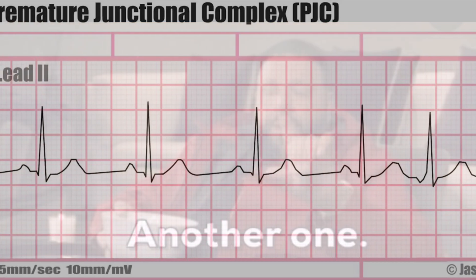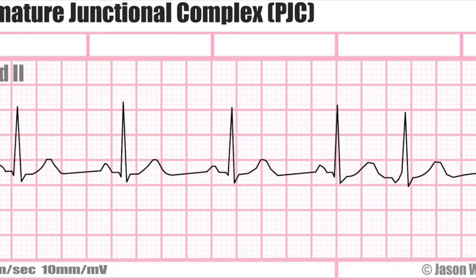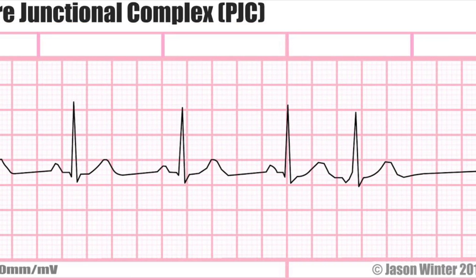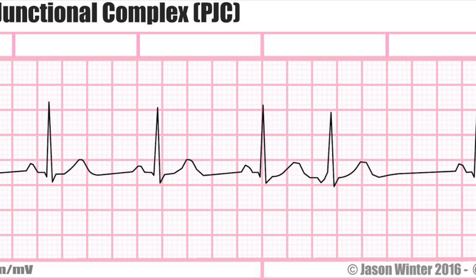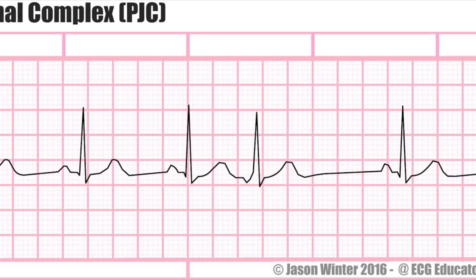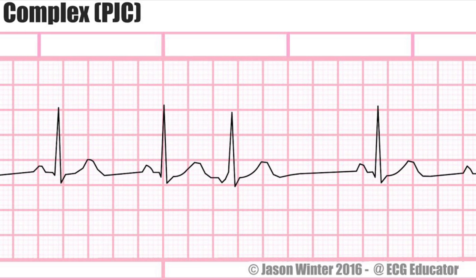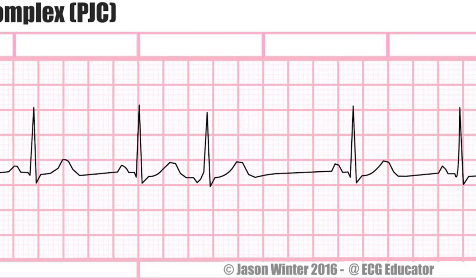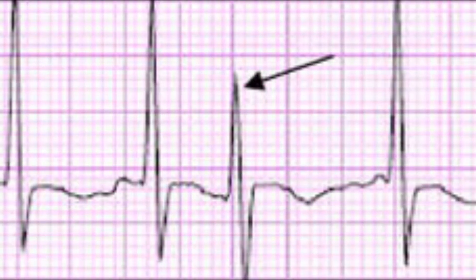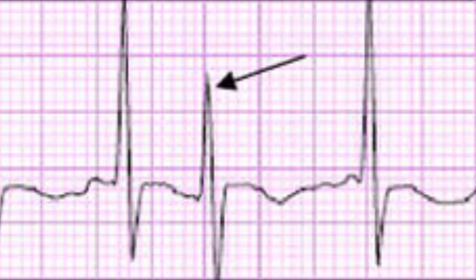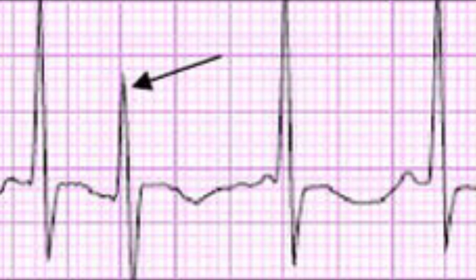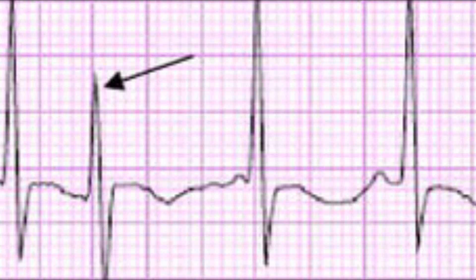This is the last premature contraction that we'll be talking about. PJCs come from the AV node, and you can have them regardless if you're healthy, young, old, or unhealthy — it doesn't matter. But unlike PACs and PVCs, they're not as common.